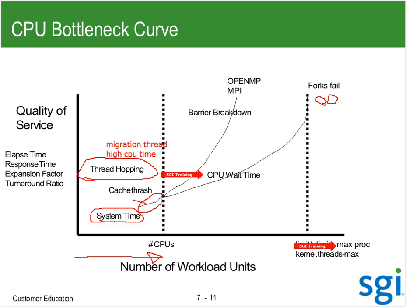Once I hit the maximum number of processes from ulimit, kernel.threads-max, or maxpid — which often has to be increased in large CPU systems and can go up to 999,999 — that's the largest the process table can get to, and then forks start failing because there's no process table space. The second week advanced admin class begins with a process fork storm that actually hits that limit.